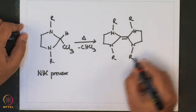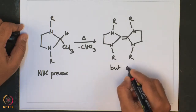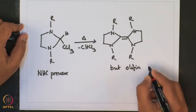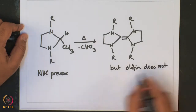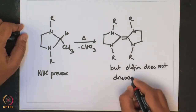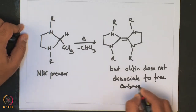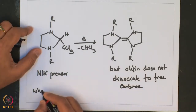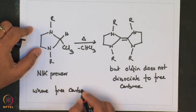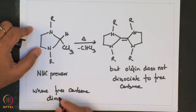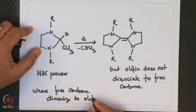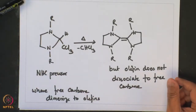This olefin does not dissociate back to free carbene; rather, free carbene dimerizes to give the olefin. So, transition metal carbene complexes can be synthesized from the carbene precursor, or by treating the free carbene with a metal precursor in the presence of a base.